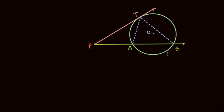So if PT and PAB are drawn, then there is a relationship like this: PA times PB is equal to PT squared. And we need to prove this. How do we approach this?